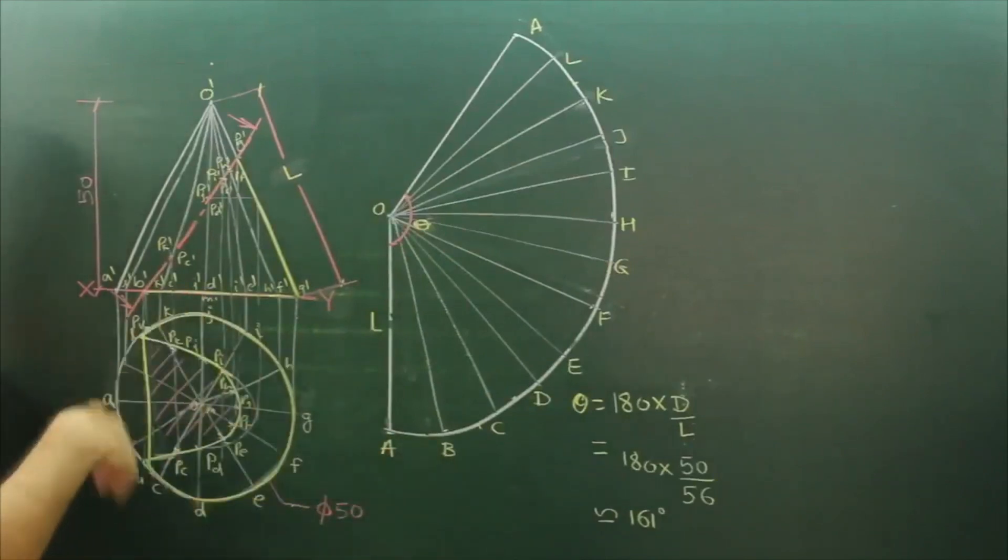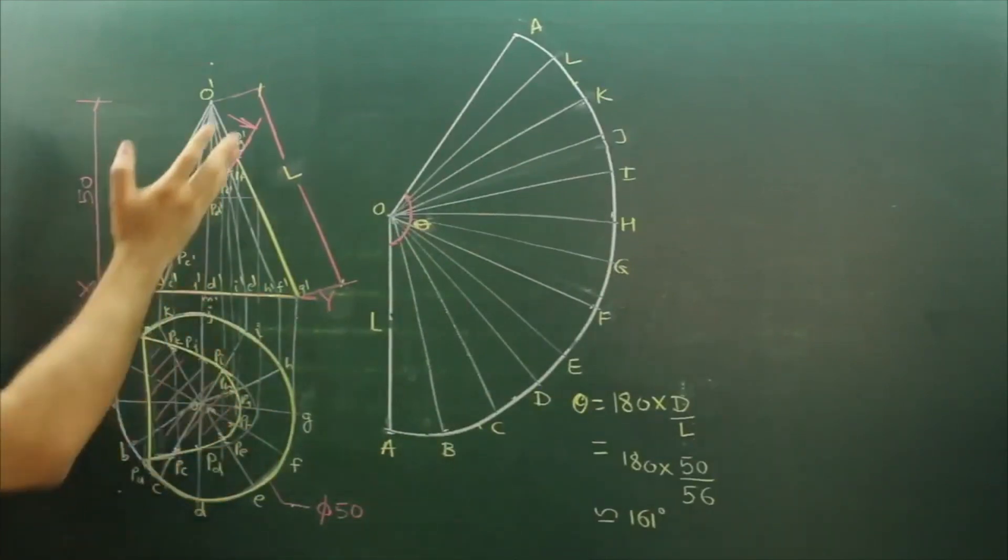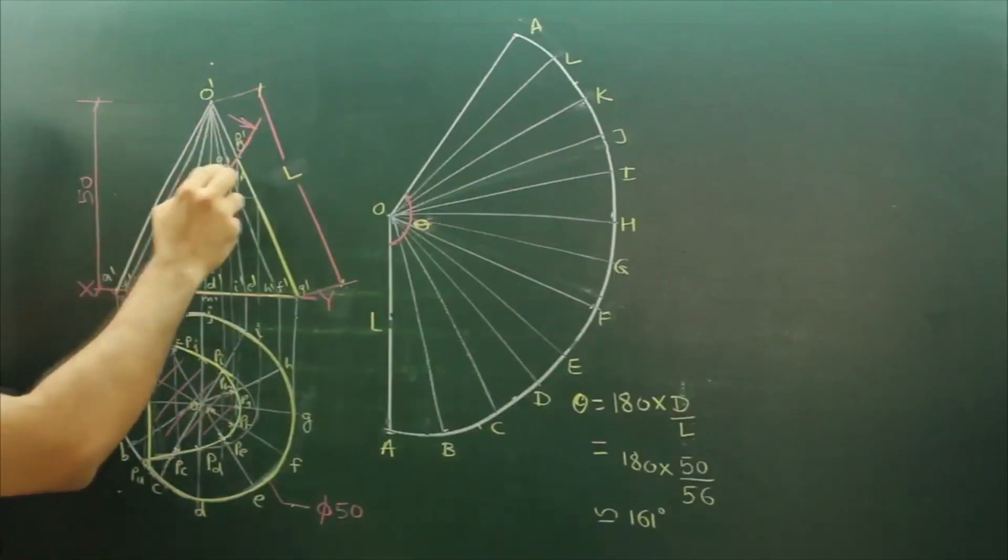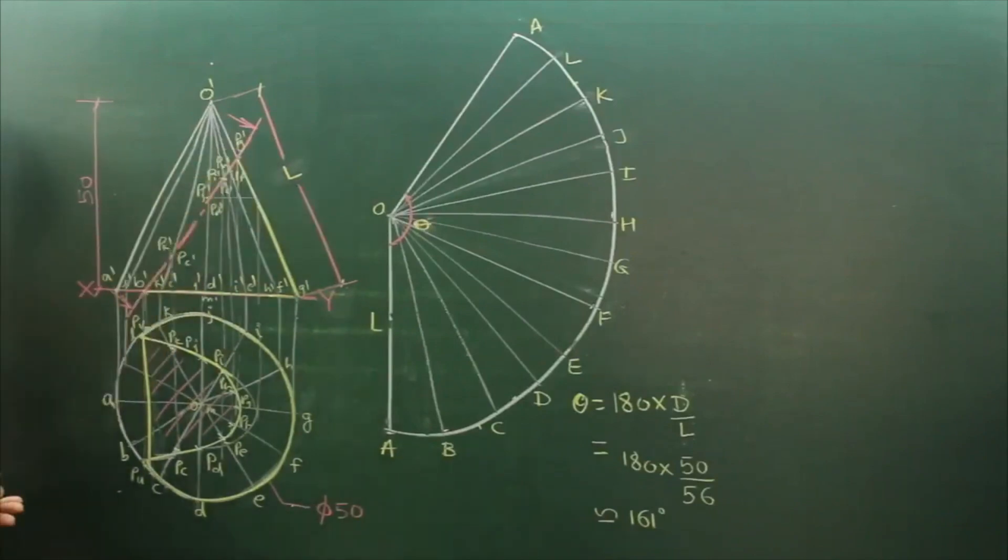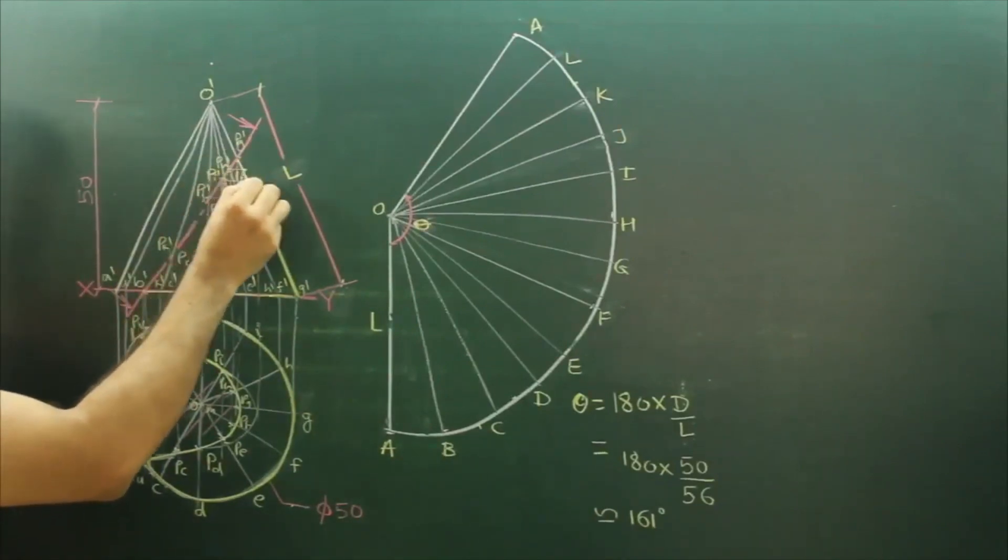You can divide into eight parts also, it's up to you. When you cut like this, whatever points you get, you project on the true length. See this point: PG dash, PF dash, PH dash.